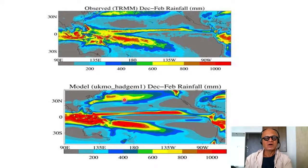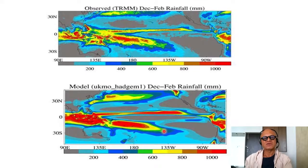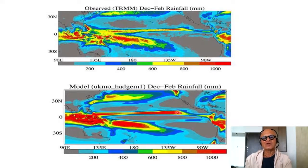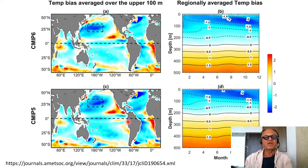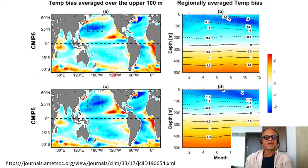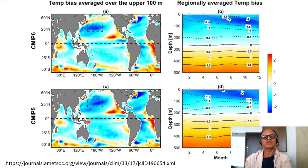Even with a full coupled model — this one from the UK Met Office — you can still have biases in terms of energy balance resulting in wind biases, ocean current biases, ocean structure biases, and ocean temperature biases, which then feed back to atmospheric biases. The temperature biases shown here are for the CMIP6 models, the latest crop of IPCC models for Assessment Report 6. These are the biases in model upper 100-meter temperatures compared to observational estimates. This compares to the CMIP5 crop from Assessment Report 5, released in 2014.